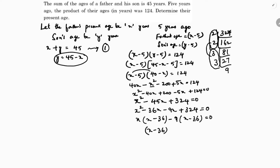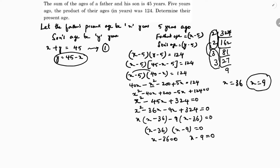Factoring: x into x minus 36, and minus 9 into x minus 36 equals zero. So x minus 36 equals 0, giving x equals 36, or x minus 9 equals 0, giving x equals 9. Since x represents the father's age, x equals 9 is not possible. Therefore, the father's present age is 36 years.